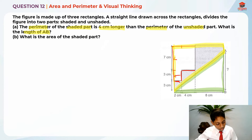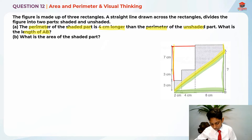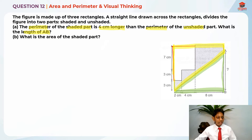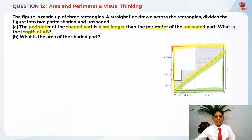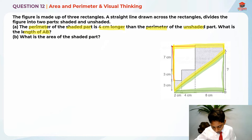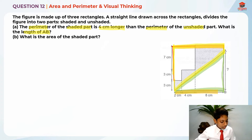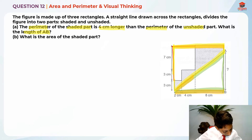Let me erase the inner lines so it's easier to visualize. This new perimeter is actually 4 cm longer than the green perimeter. To find out which part is longer, we cancel out the things that are the same. This line and this line are the same, so they cancel each other out. These two lines over here are also the same and cancel each other out.